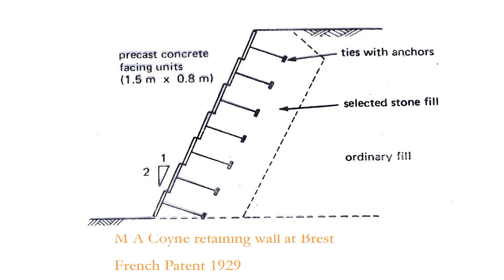When the soil is settling, the panels will try to settle. If you don't allow them to settle, the panel will remain in place while the soil coming down creates a pull-out effect on the panel. So what they did was simply allow the panel to move - they said they are not going to place the top panel directly over the bottom one. They simply displaced it by the thickness. So it can move if it wants. What a beautiful concept in the 1929 patent.